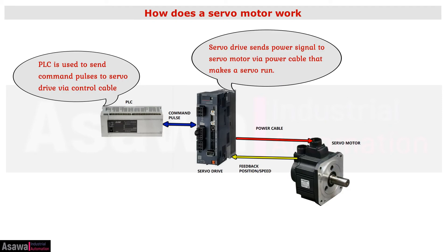Now we will understand how a servo motor works. We need a PLC and a servo drive to run a servo motor. The PLC is used to send command pulses to the servo drive via control cable. The servo drive then sends a power signal to the servo motor via power cable, which makes the servo run.